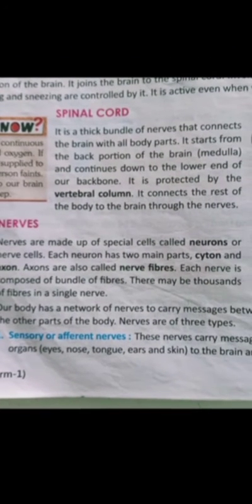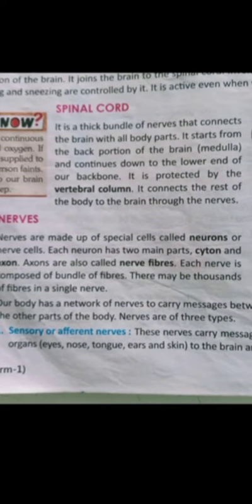Number one is the sensory or afferent nerves. These nerves carry messages from the sense organs — like the eyes, ears, nose, tongue and skin. We know that there are five sense organs. These sensory nerves carry messages from the sense organs and deliver these messages to the brain and the spinal cord.